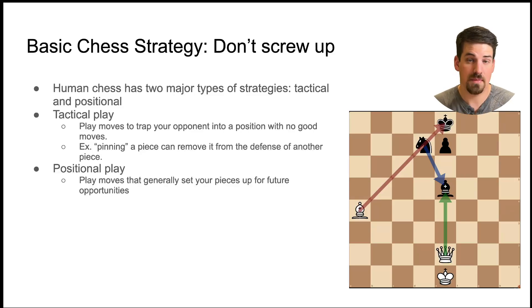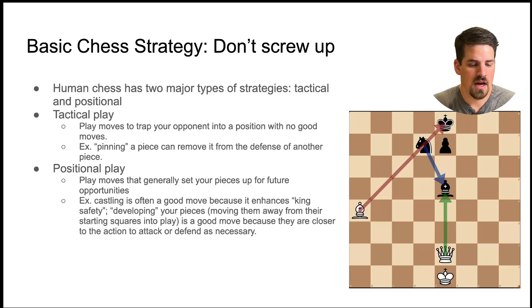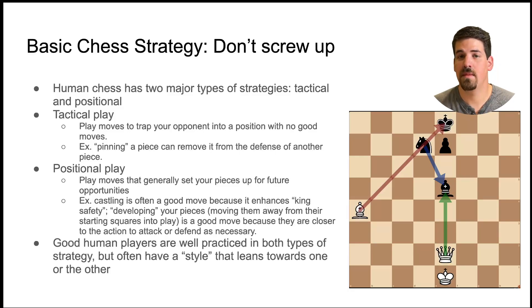Positional play on the other hand is playing moves which generally set the pieces up for future opportunities in good positions. Examples of this would be castling. If you castle the king and the rook you often put your king into a more safe position which is more difficult to attack. Or another one would be another principle of good play would be developing your pieces. In other words bringing your pieces off of the back rank and into play where they're more able to get into the game in defense or in attacks later in the game. Good human players can play both ways and do play both ways in any given game but oftentimes human players have a style that they prefer more.